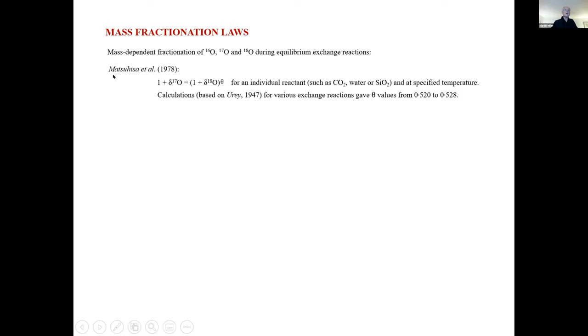So after the paper of Clayton et al., 1973, Bob Clayton was also a co-author on this paper by Matsuhisa et al., 1978, where they considered this power law relationship in more detail. And for an individual reactant, such as CO2, water, quartz, etc., we have this power law relationship between the delta values. And, of course, 1 plus delta-17-O is simply 17O over 16O. These calculations were based on the theoretical framework published by Harold Urey in 1947. And Matsuhisa et al. calculated that for various exchange reactions, theta would vary from 0.52 to 0.528.